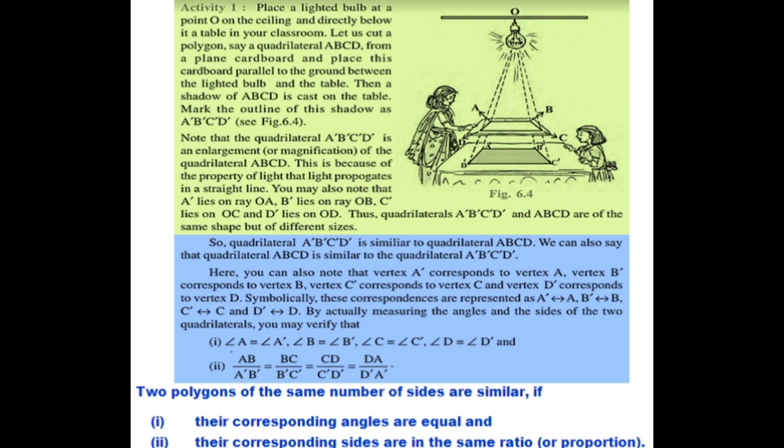That means AB/A'B' = BC/B'C' = CD/C'D' = DA/D'A' = some constant value k. So two polygons of the same number of sides are similar if their corresponding angles are equal and their corresponding sides are in the same ratio, that is, proportional. Always remember both conditions: corresponding angles equal and corresponding sides in the same ratio.